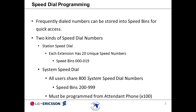Frequently dialed numbers can be stored into speed bins for quick access. There are two kinds of speed dial numbers: station speed dial and system speed dial. With station speed dial, each extension has 20 unique numbers just for that phone, stored in bins 00 through 19. With system speed dial, all users share a common 800 speed dial numbers, stored in bins 200 through 999.